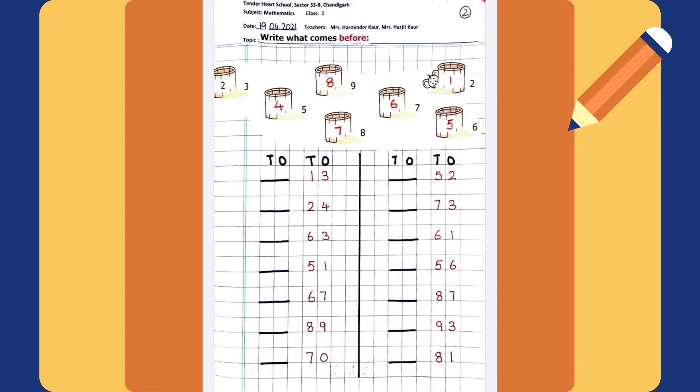What comes before 3? 2. What comes before 9? 8. What comes before 2? 1. What comes before 5? 4. What comes before 8? 7. What comes before 6? 5.